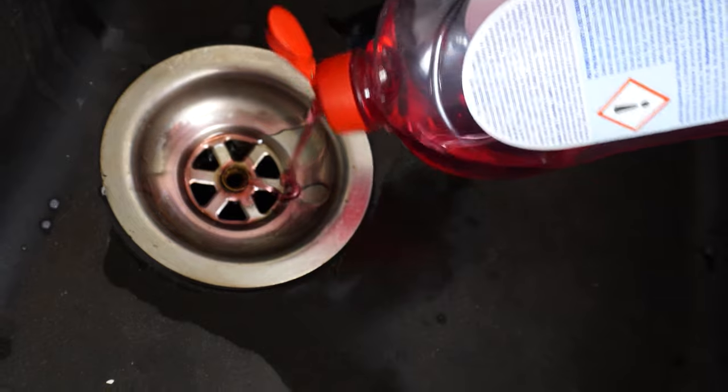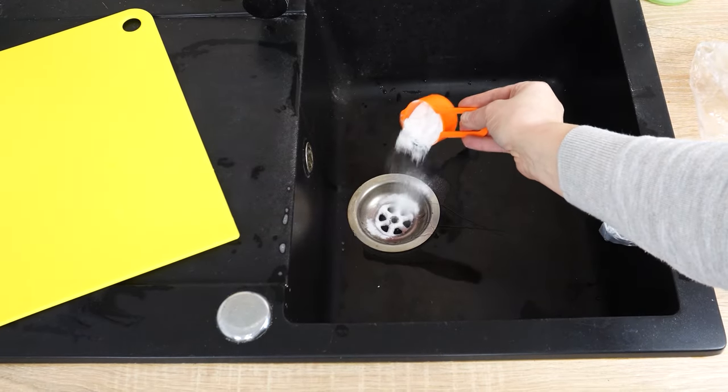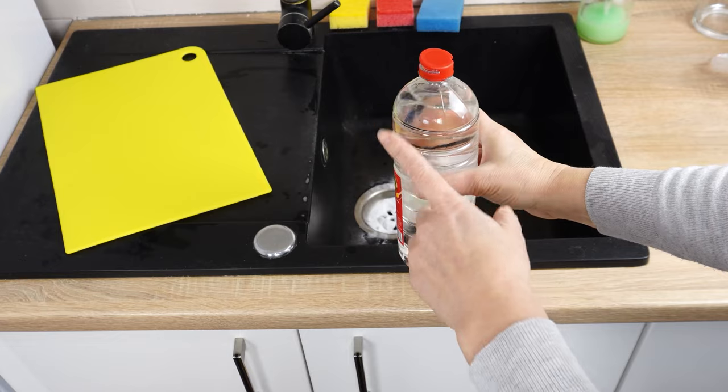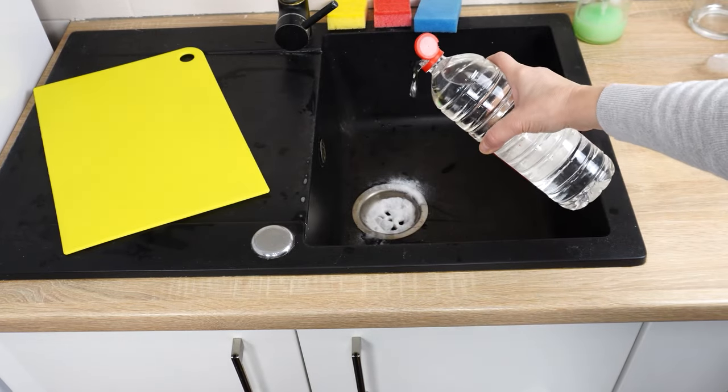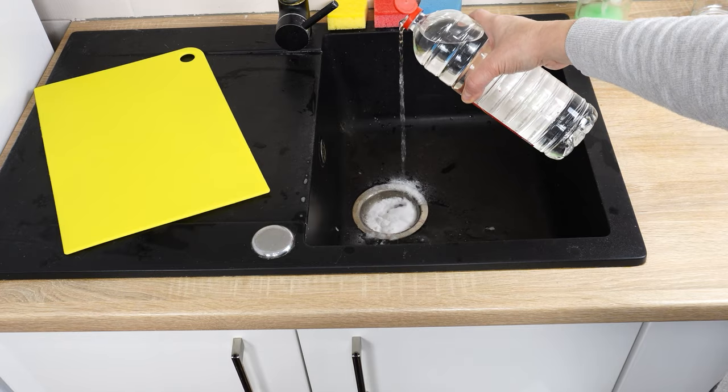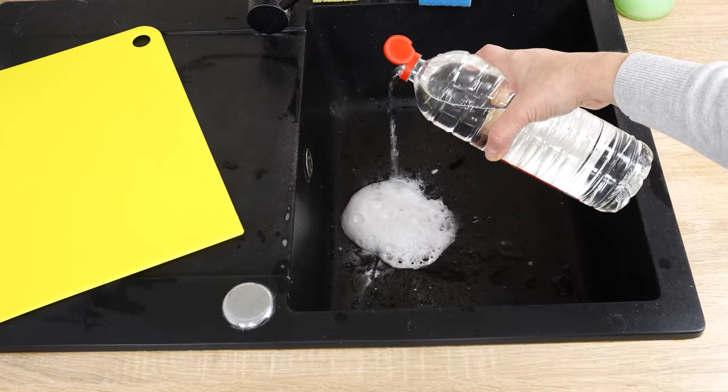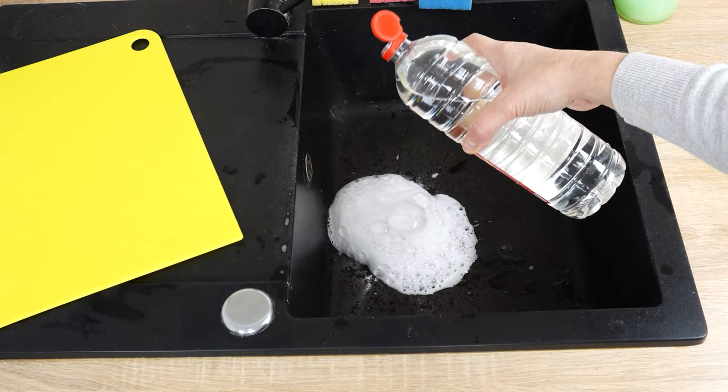Now we'll use a secret white powder. Pour about four tablespoons into the sink. Time for the third ingredient. It's vinegar. Just pour about 200 milliliters into the drain. Immediately, a reaction will occur between the vinegar and the white powder, and foam will quickly start to form. You probably already guessed that the white powder was baking soda.